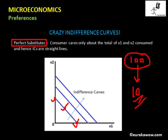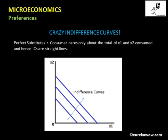These indifference curves have a slope of minus one because the consumer is substituting one unit of good one with one unit of good two. However, if the consumer is substituting one unit of good one with two units of good two, then the slope of the indifference curve will be minus two instead of minus one. The minus sign indicates the negative slope of the indifference curves in this case.